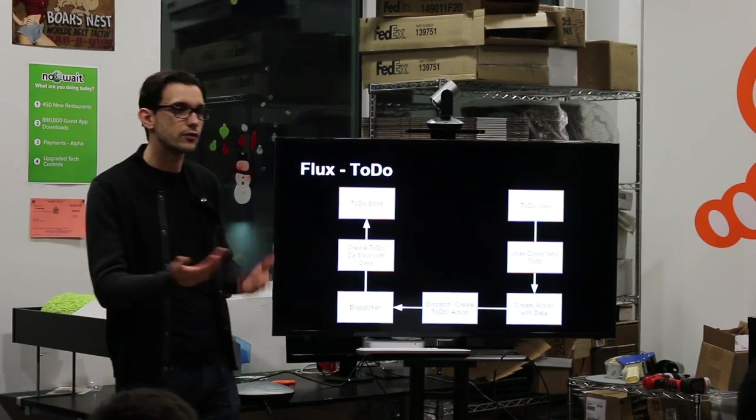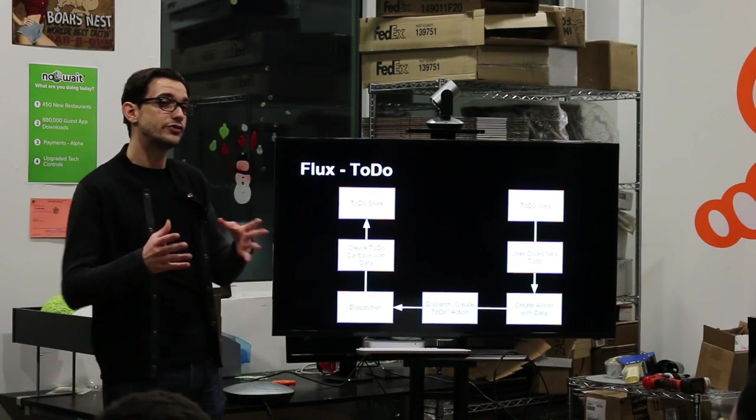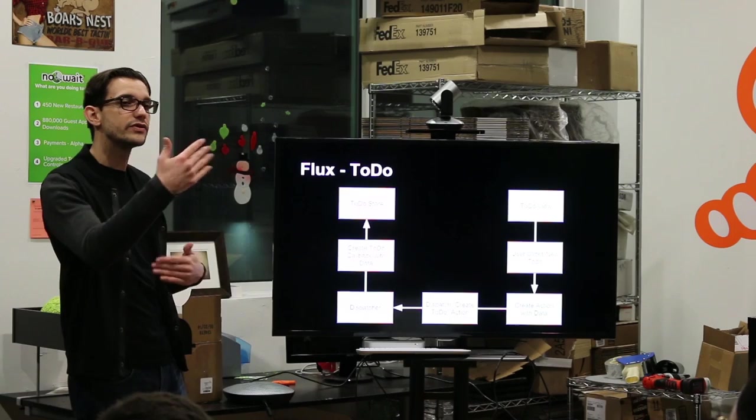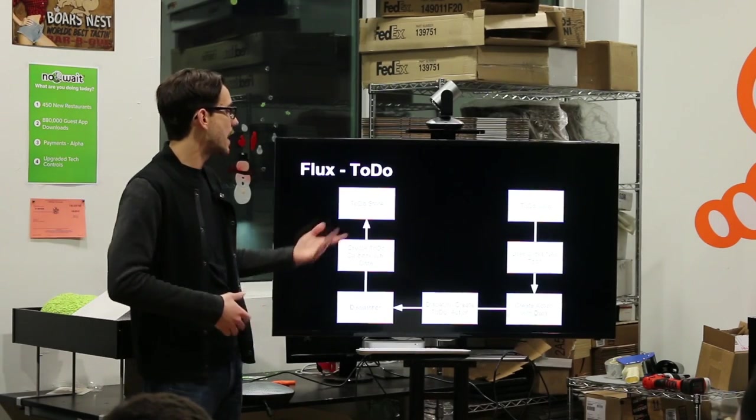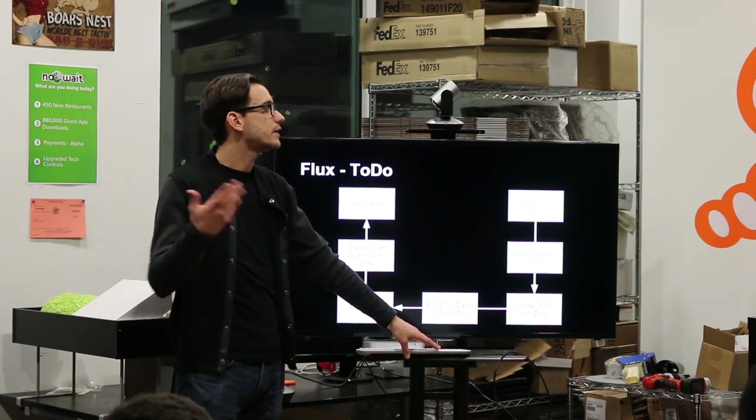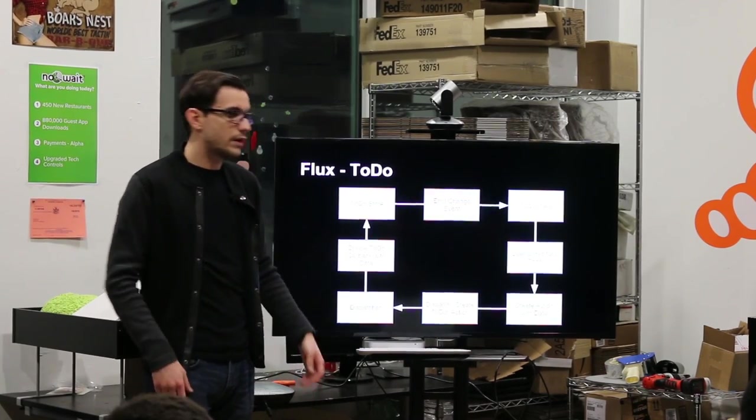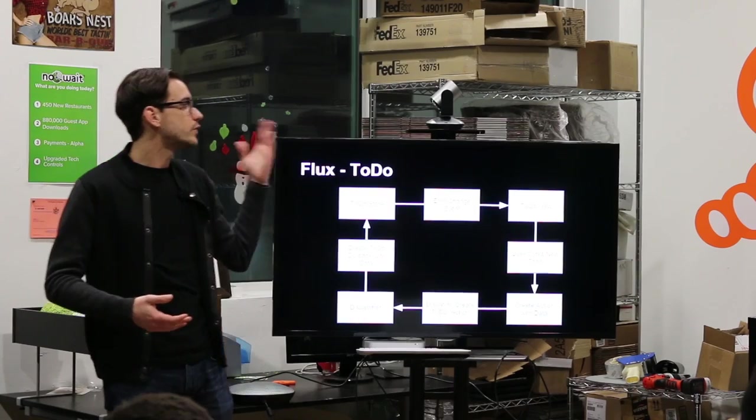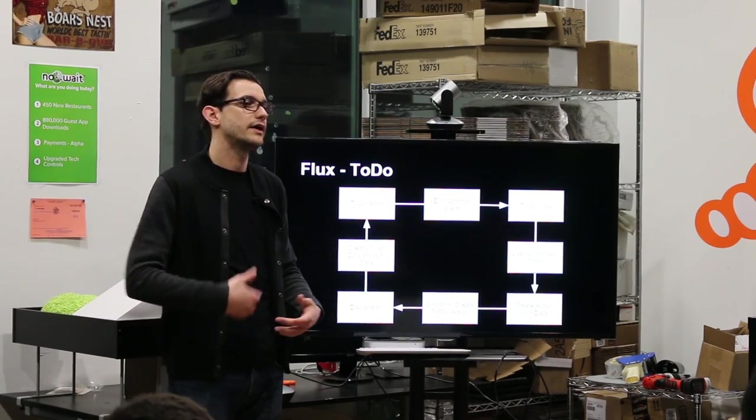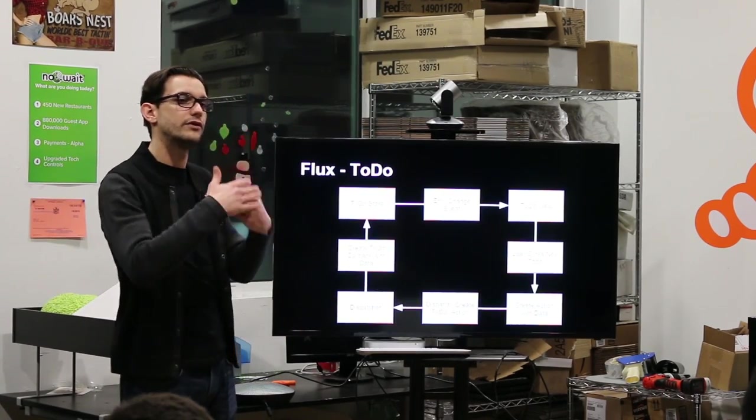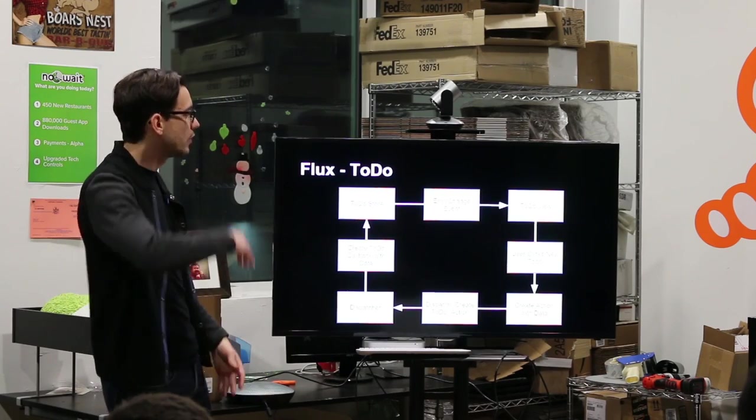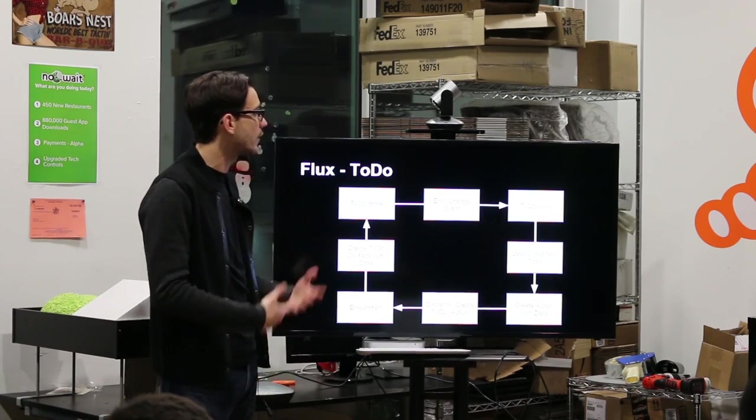And it has, for example, the title or whatever, it adds the to do to the to do list array, for example. And then it says, Hey views, any views that are subscribed to me, you need to, I updated myself. So you need to get this data. So it emits that event. And then the to do view gets that new to do list and then updates itself. And then you have in your list that new to do. So that is the long way of how it goes.